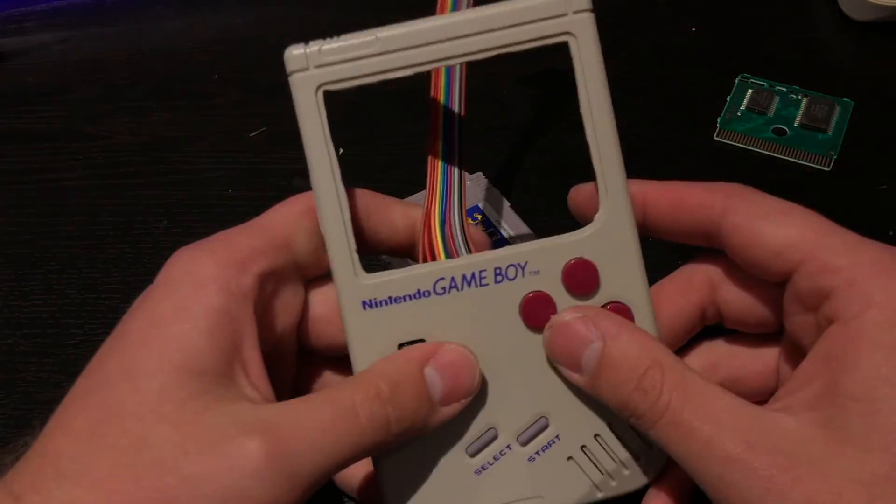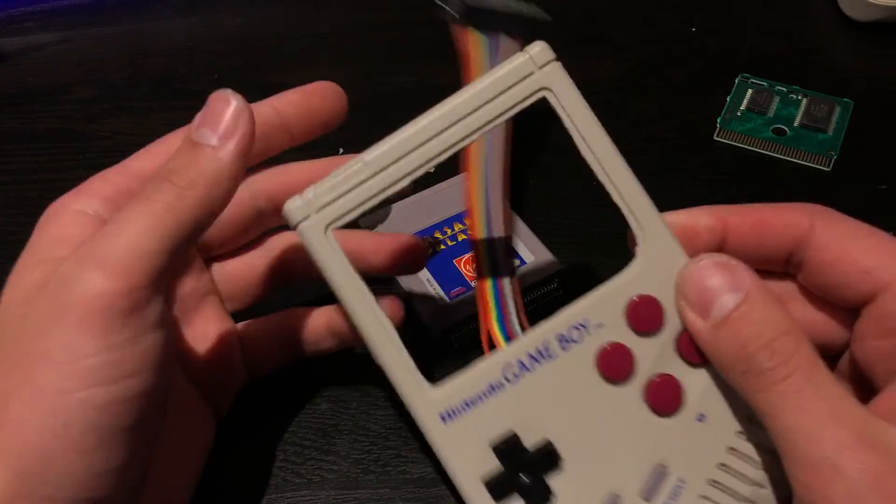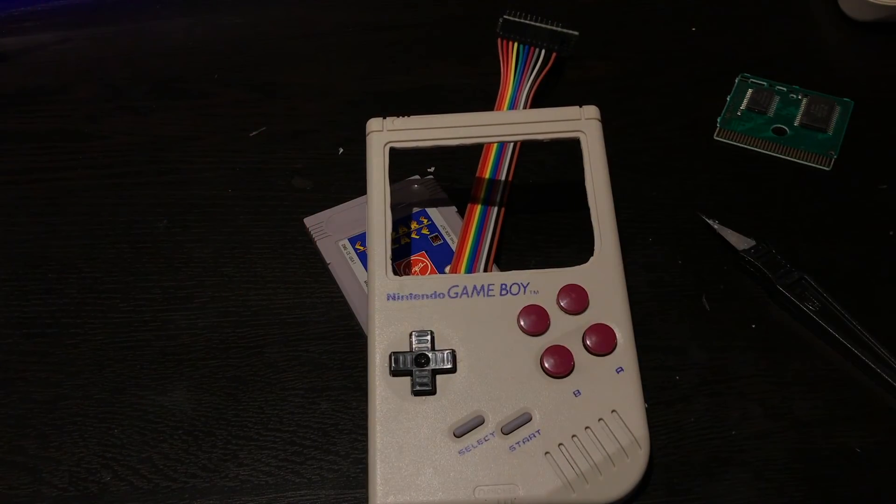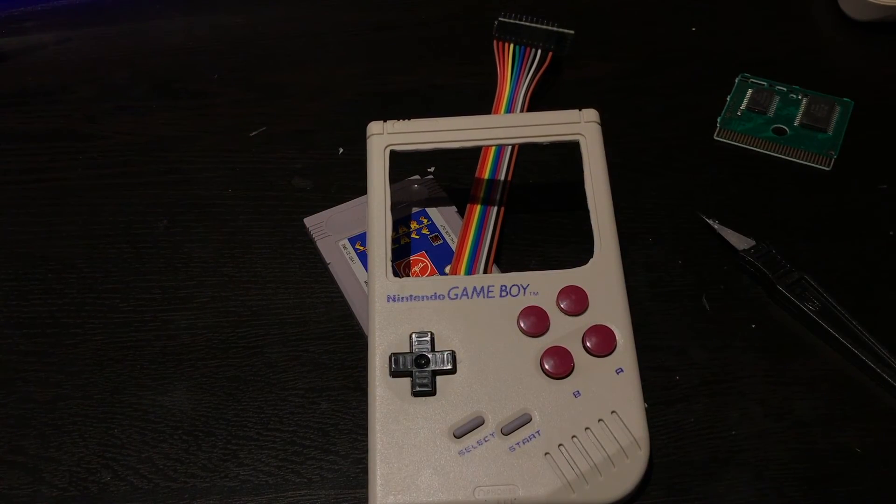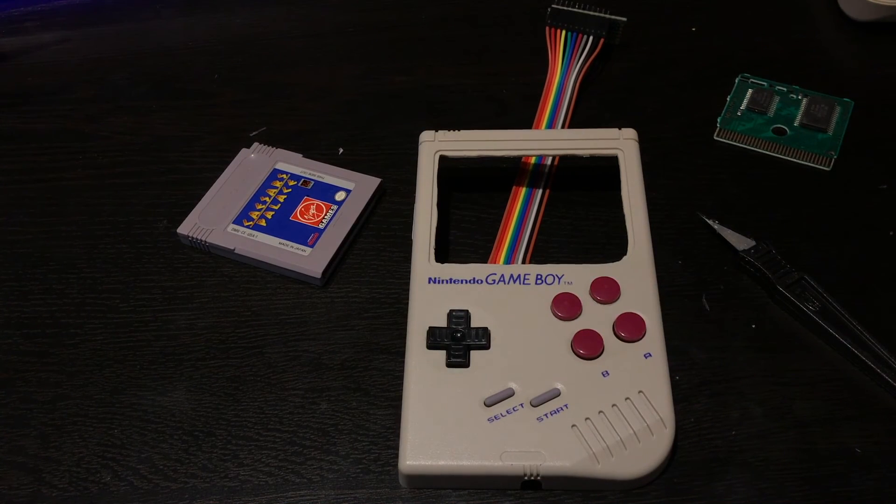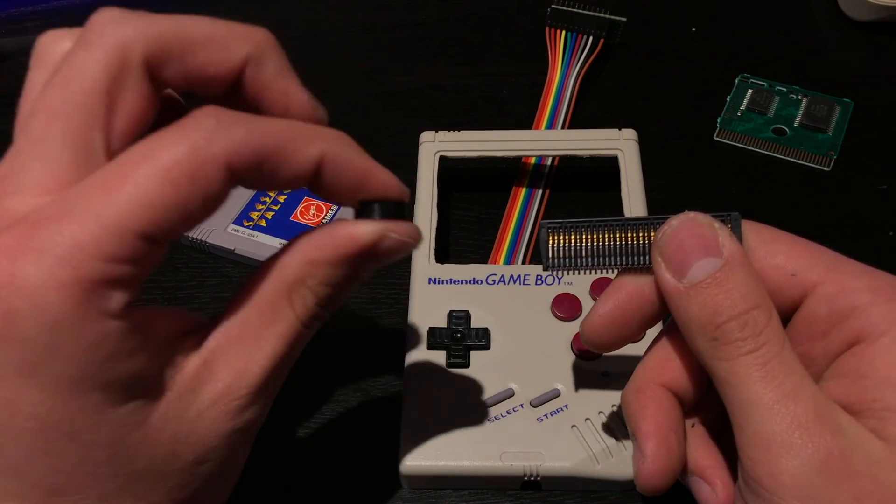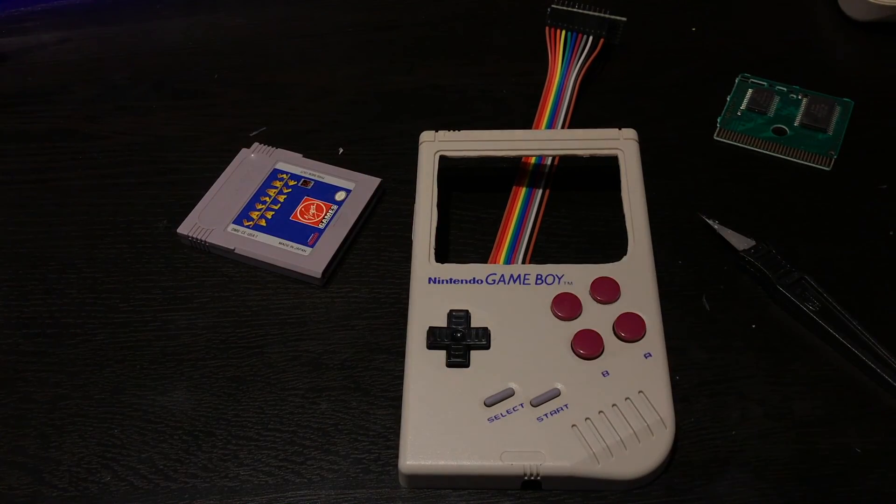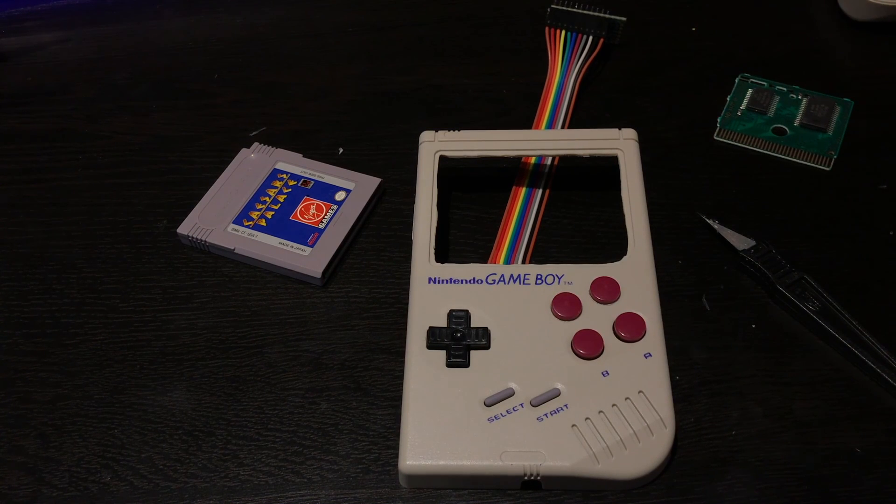And our PCB and Teensy are all wired up and fully functioning. So if you like this video and it helped you out, be sure to like, comment, and subscribe down below. Now in the next video, we're going to be installing the screen into the Game Boy Zero as well as installing the cartridge slot and these button guards. So be sure to subscribe to be notified when that video comes out. And until then, I'll see you in the next video.